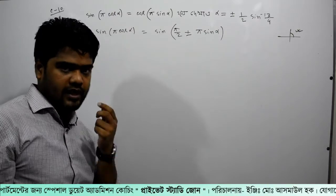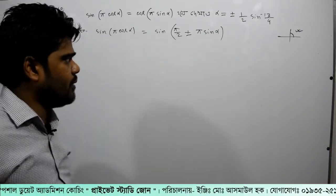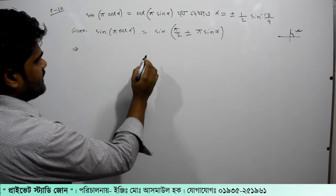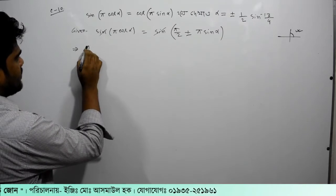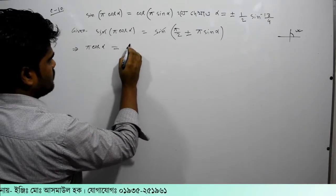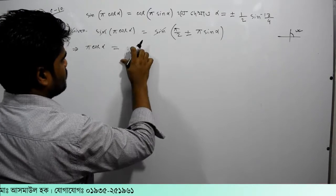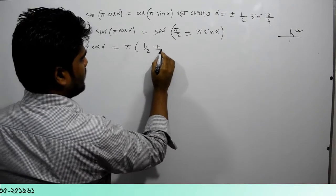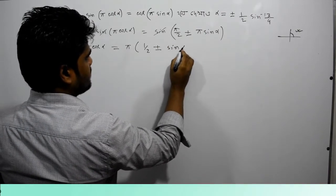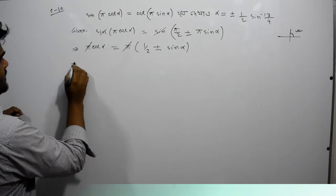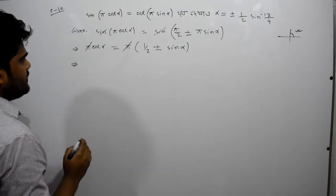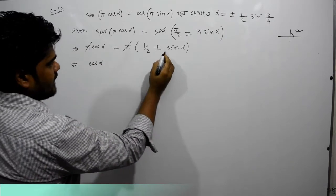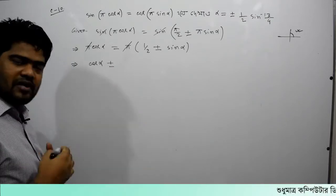So sin equals sin, which is equal to π/2. So here we have to see that we are going to do this. π is not common here. So here we have to say plus minus sin alpha. Here we have to say pi and pi — what is this? Here we have to say cos alpha.